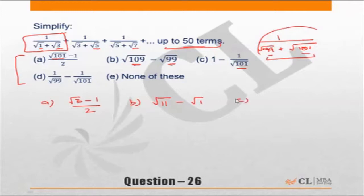Choice C: 1 minus 1 upon under root 101. Since I am looking only at the first term, under root 3.